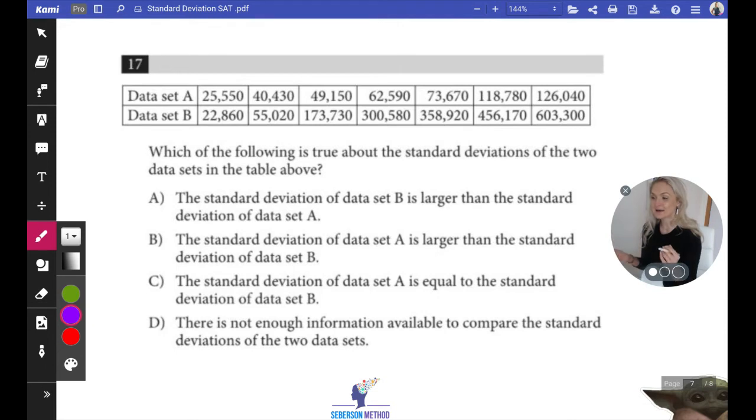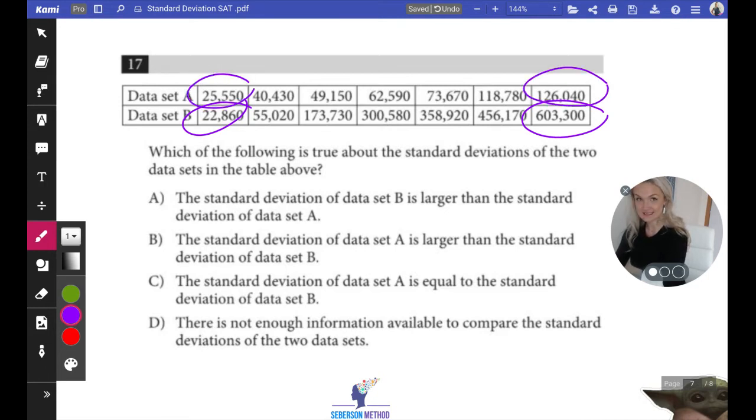How do I know? Because the lowest value is 22,000 and the highest value is 600,000. Compare that to 25,000 and 126,000.